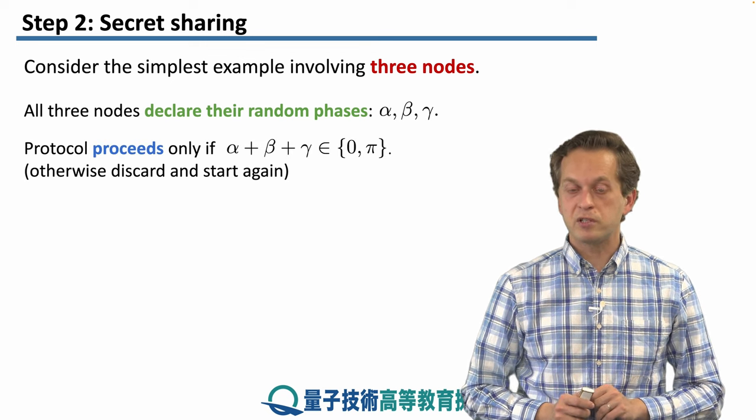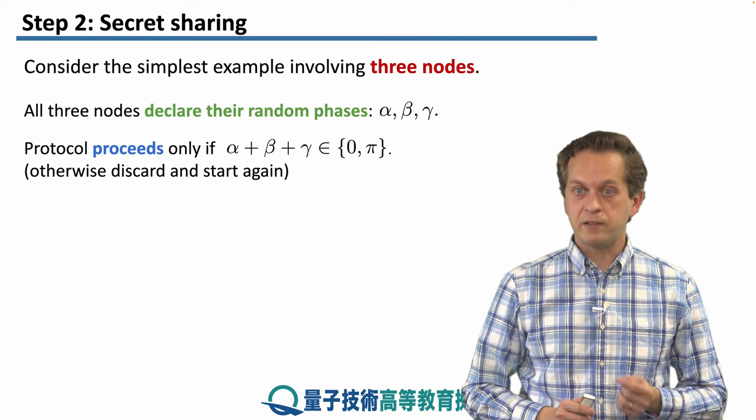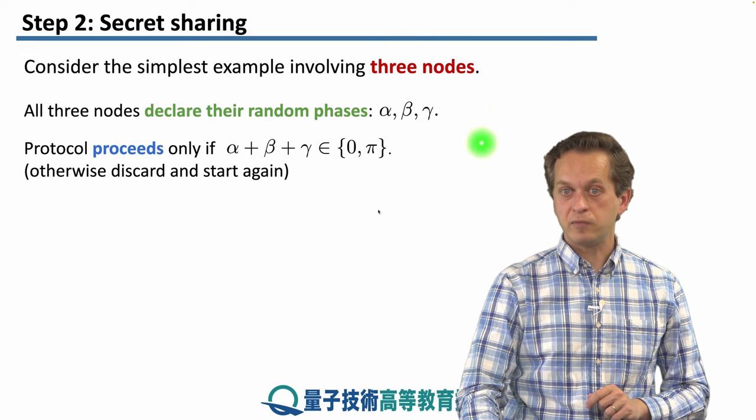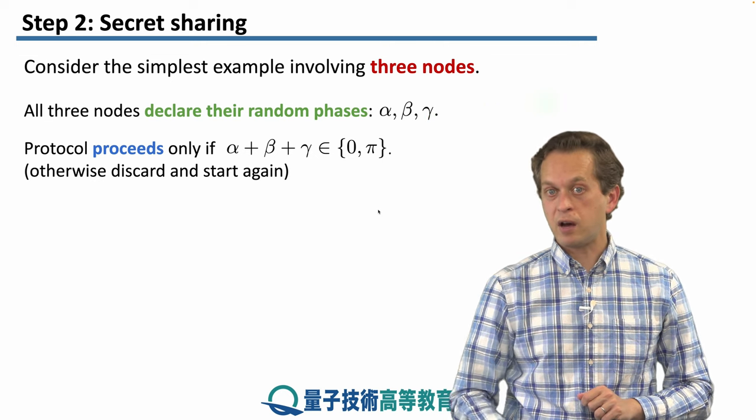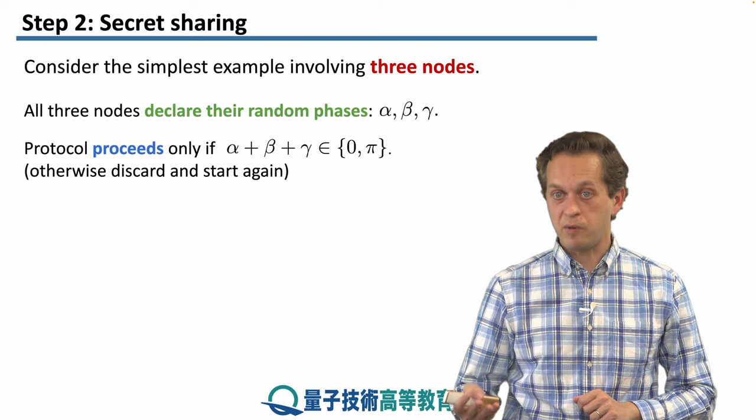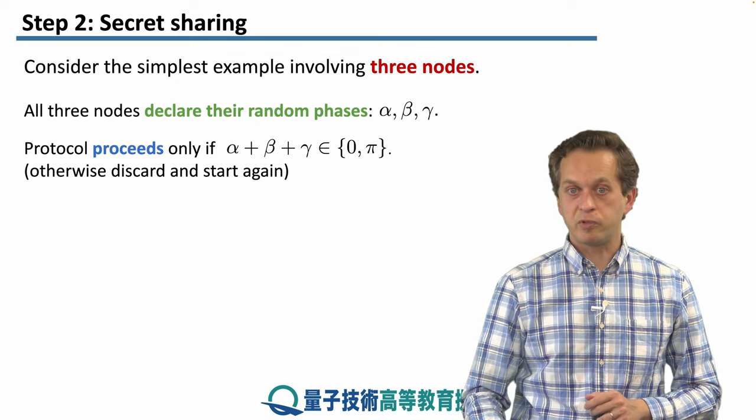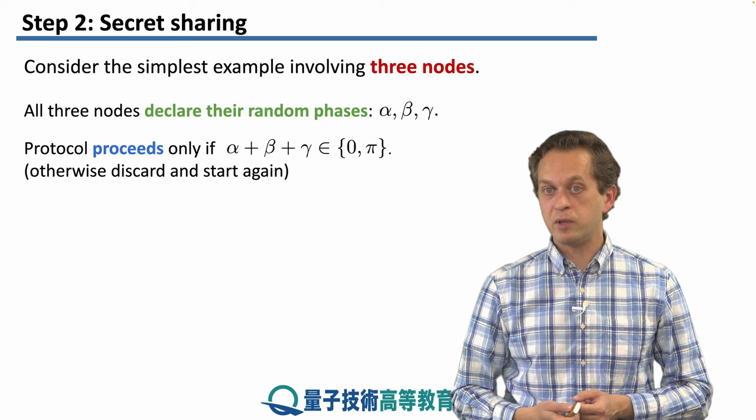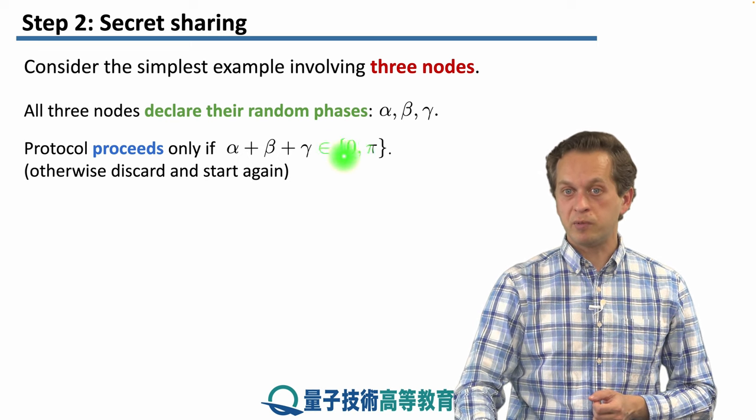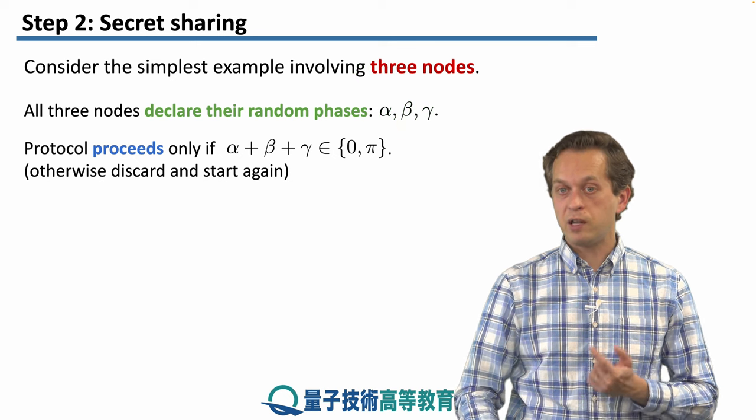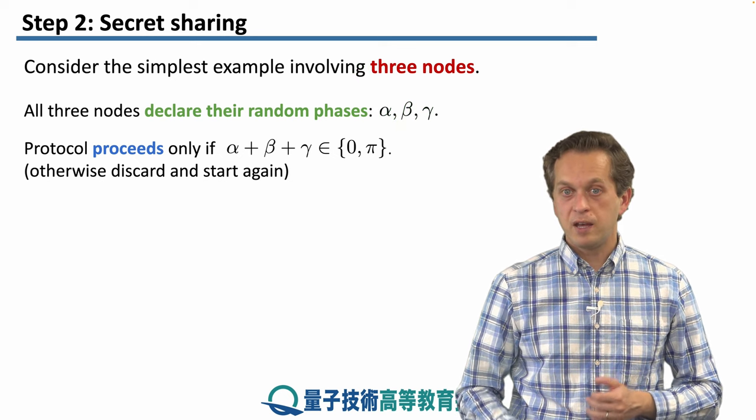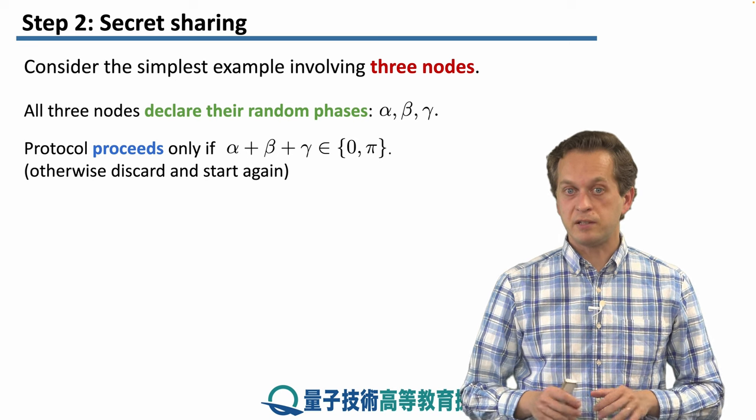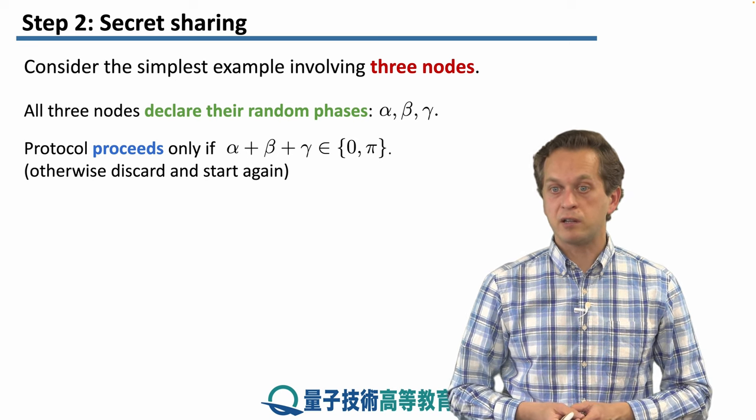Protocol proceeds only if the sum of these phases is either 0 or π. Remember, these phases are random. So if all of them are 0, then the protocol proceeds because their sum is also equal to 0. Their sum being equal to π means that two of them are π/2 and one is 0. If this is not true, then the protocol stops, the state is discarded, and the nodes have to start again.